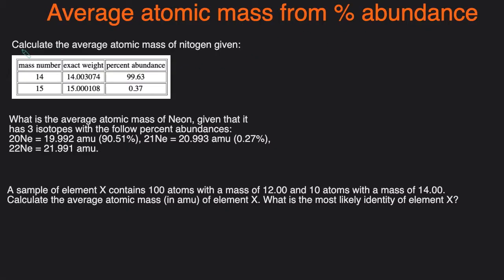For example, if we take a look at this one: calculate the average atomic mass of nitrogen given that there are two isotopes, nitrogen-14 and nitrogen-15. These are the exact weight of each isotope and these are the percent abundances. The percent abundance is just what percentage of the entire nitrogen sample is that particular isotope. So 99.63% of all nitrogen is approximately nitrogen-14, and approximately 0.37% is nitrogen-15.